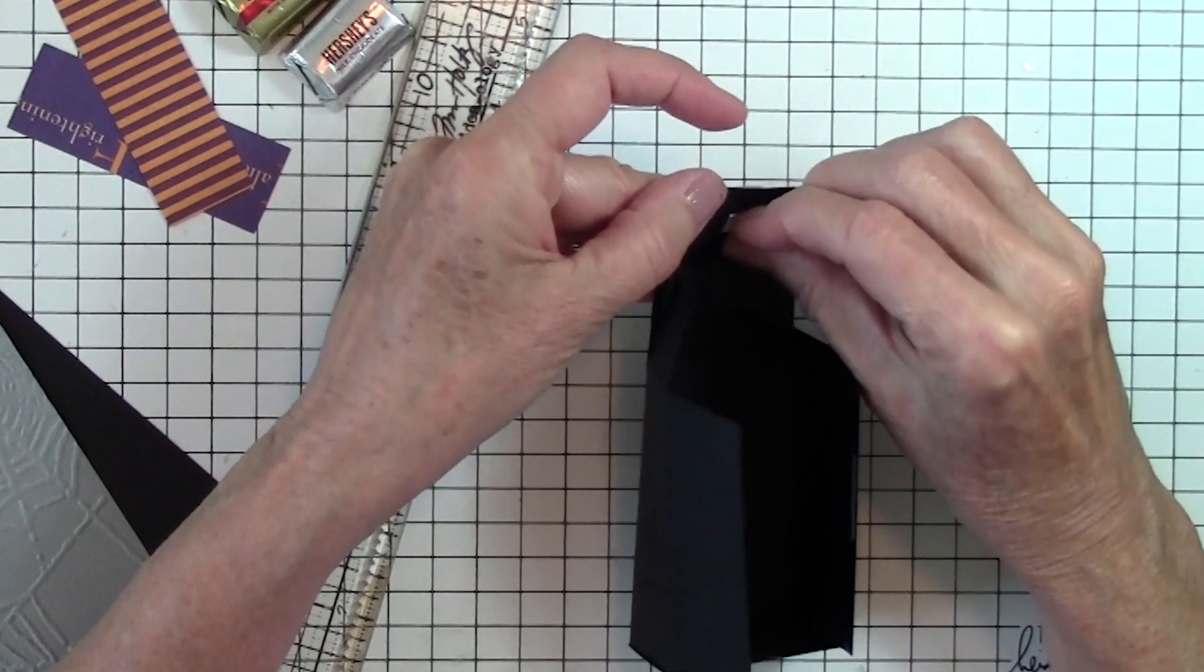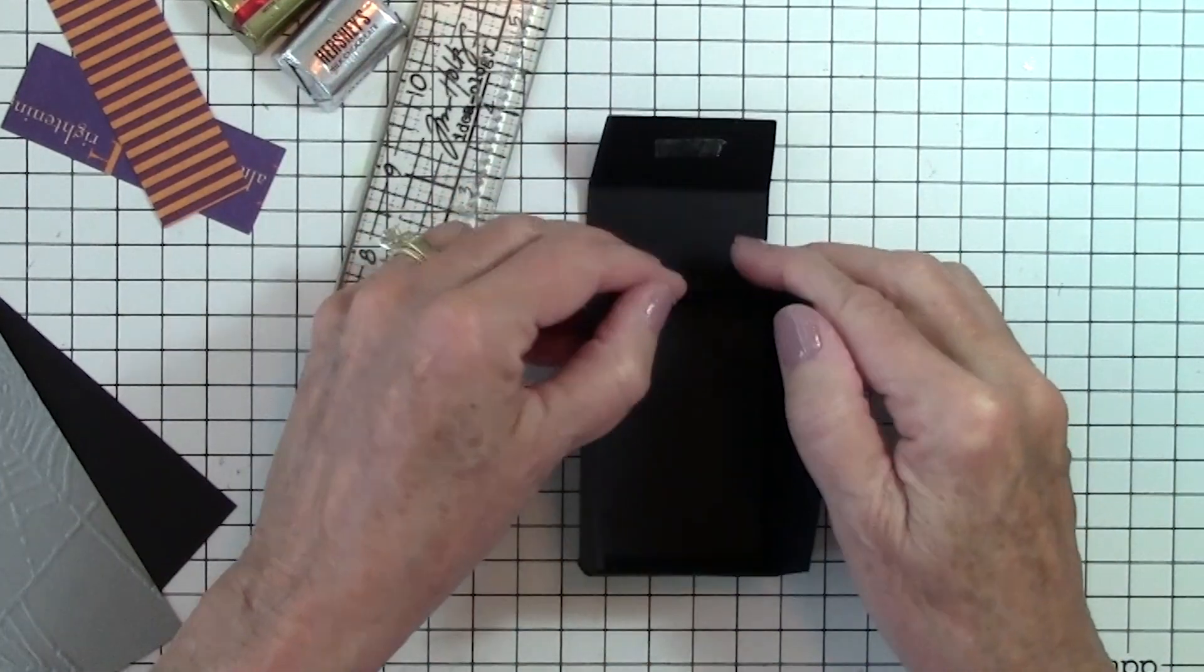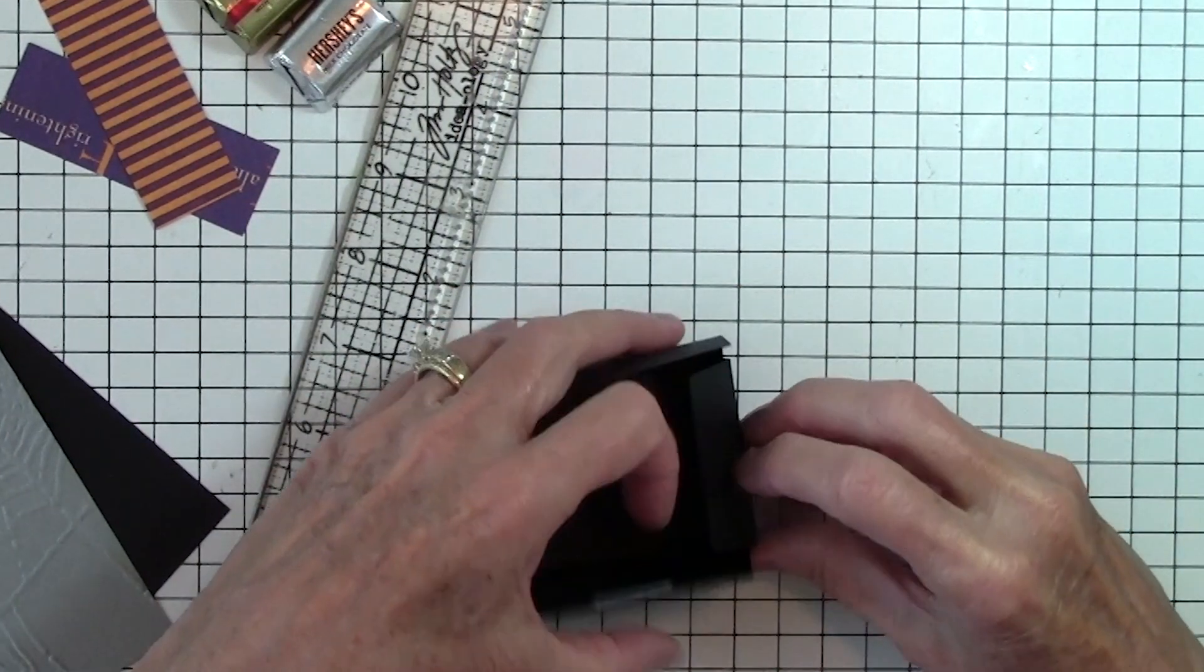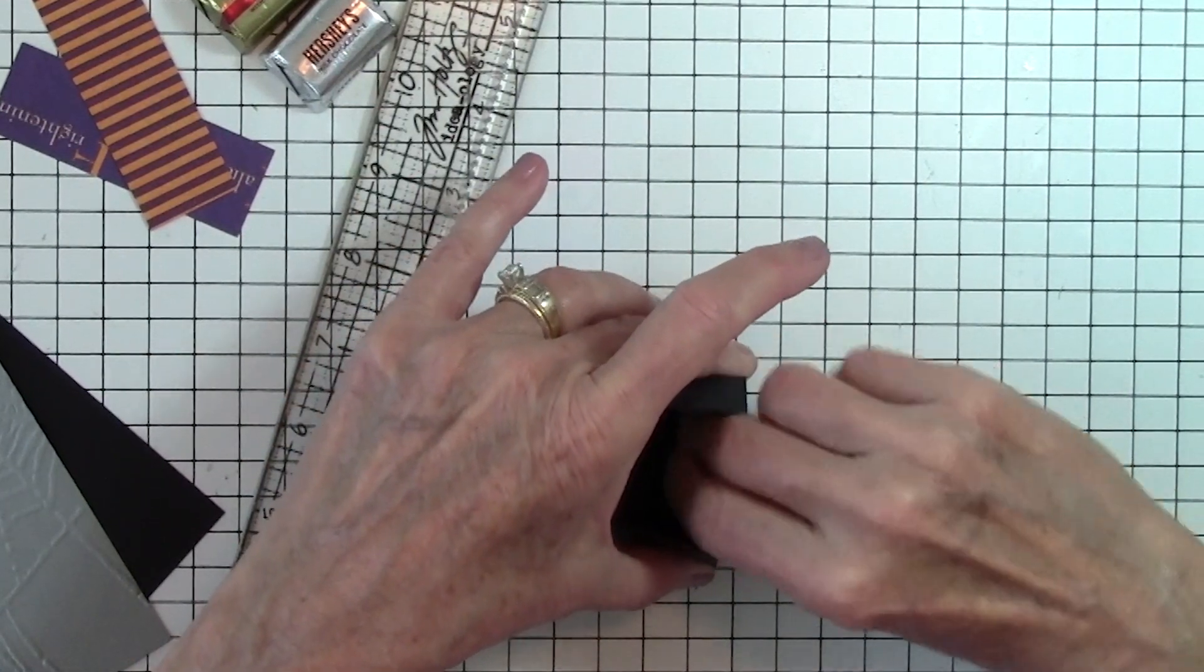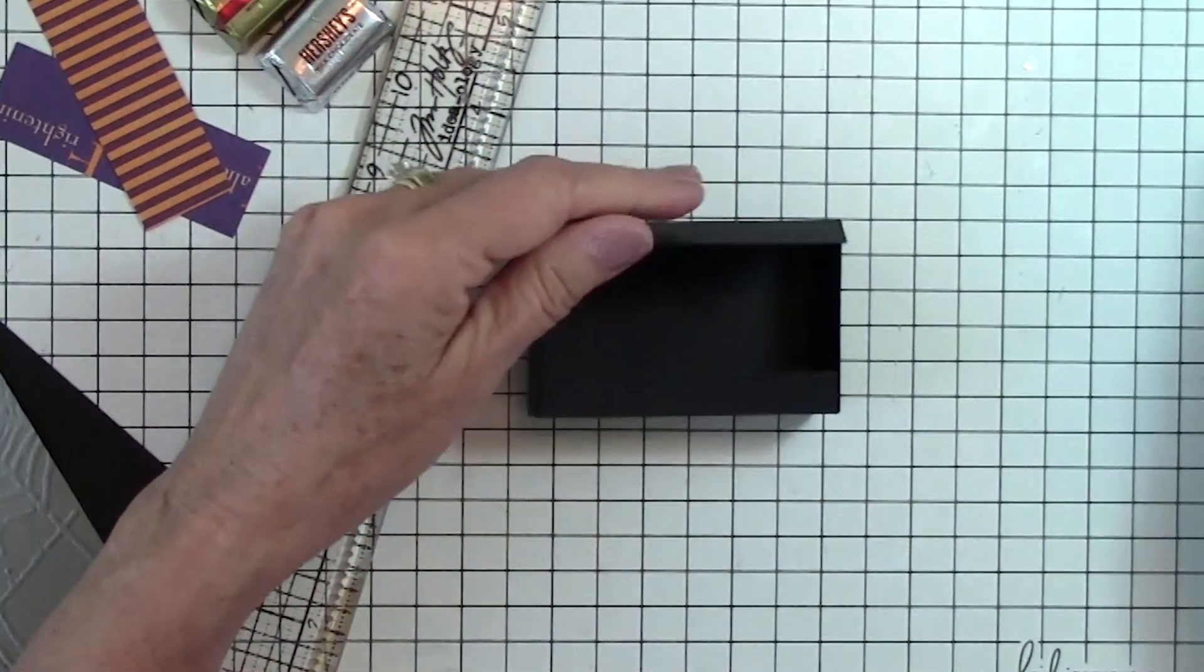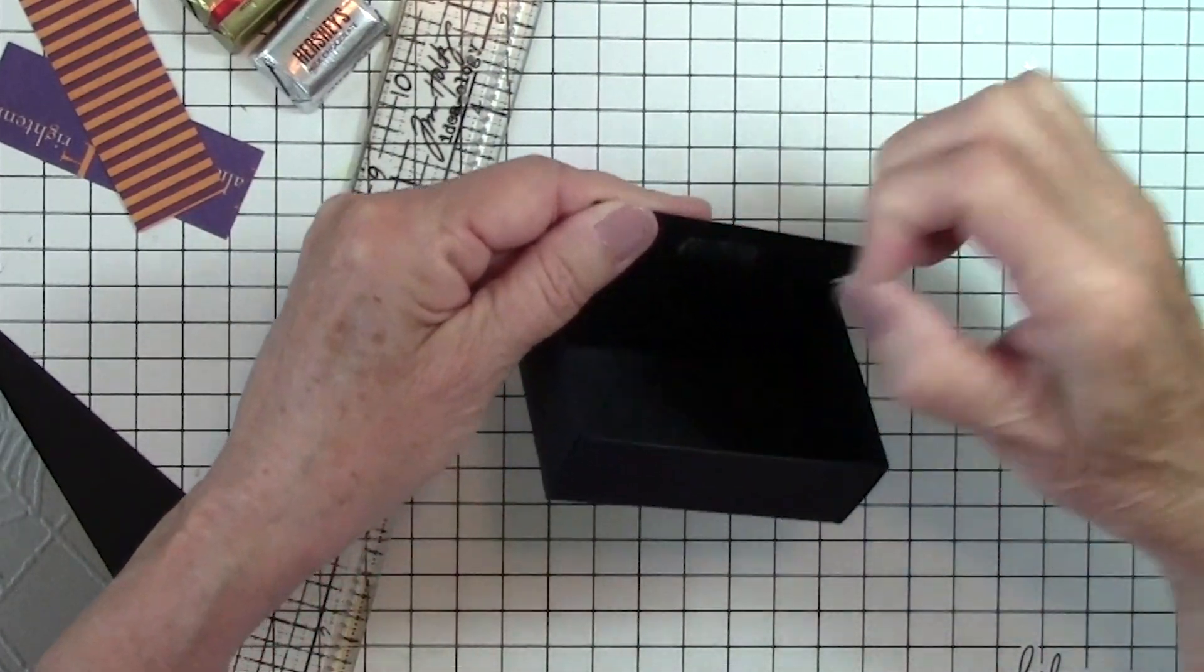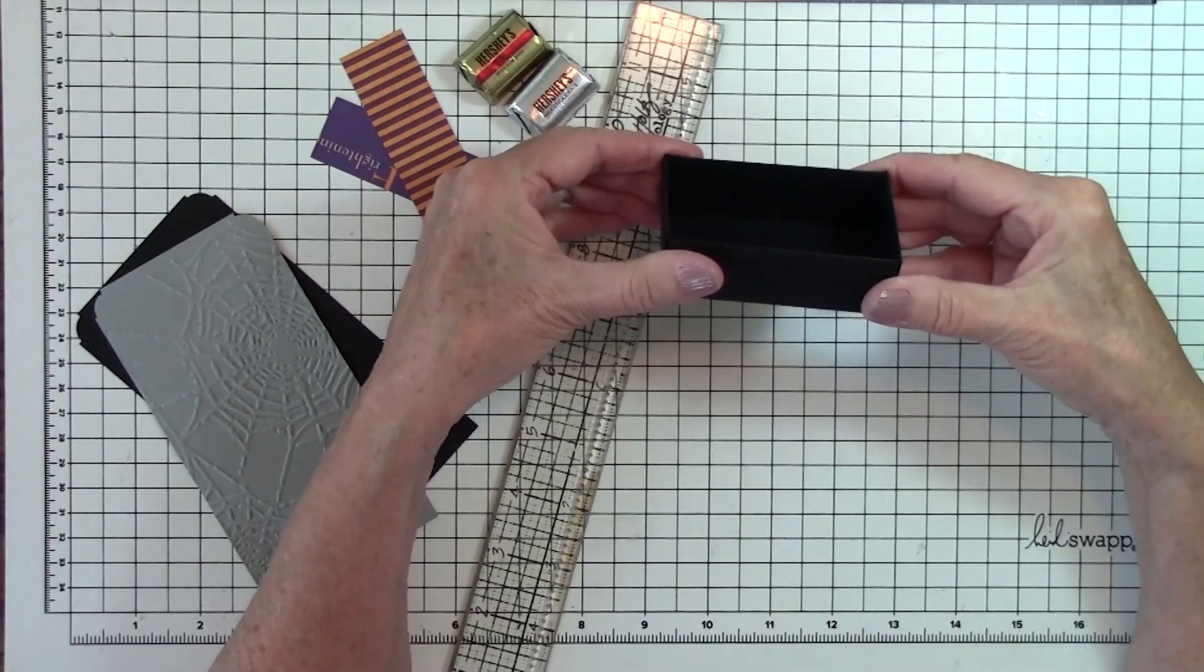And we're going to go to the other end, press the edges in, and press it down. Take your backing off the score tape and press that down. And again, the next one, take the backing off and press it in. And there's your box.